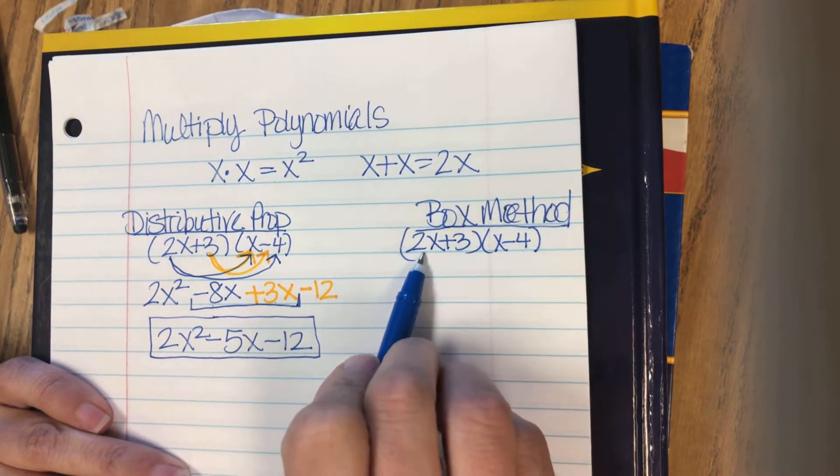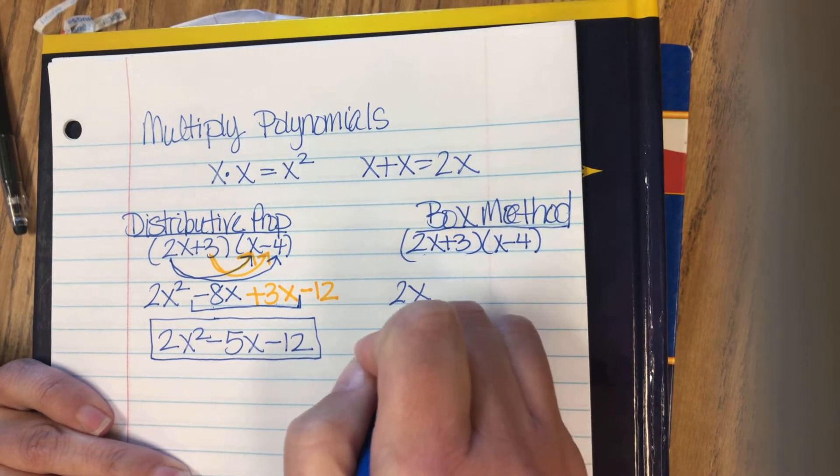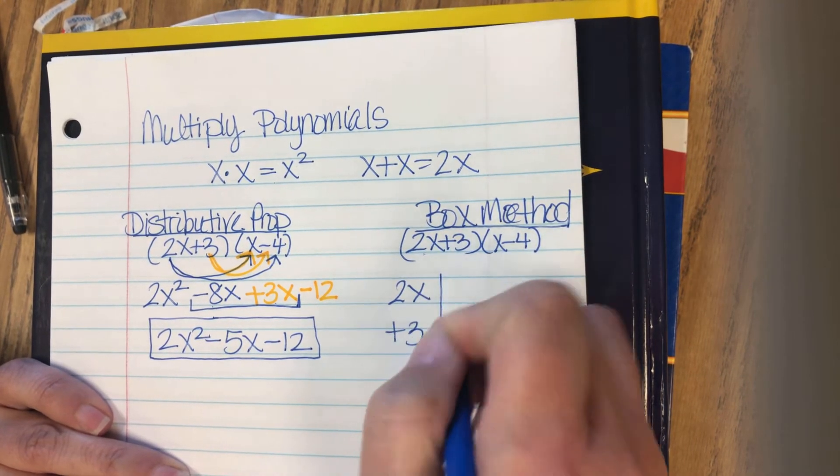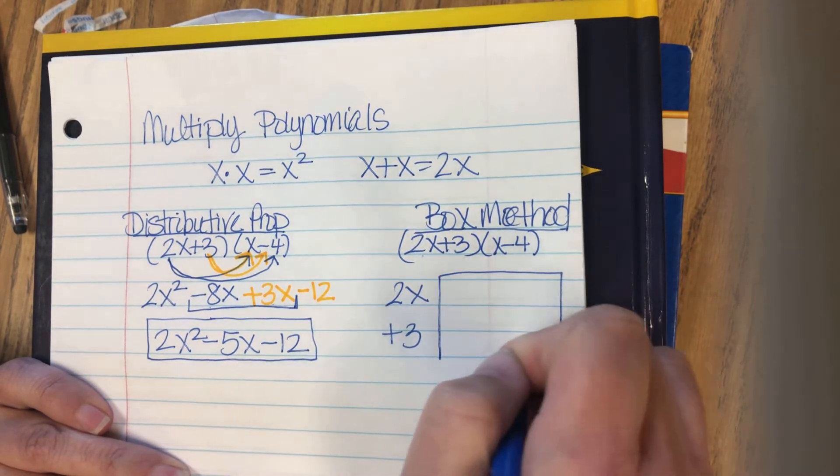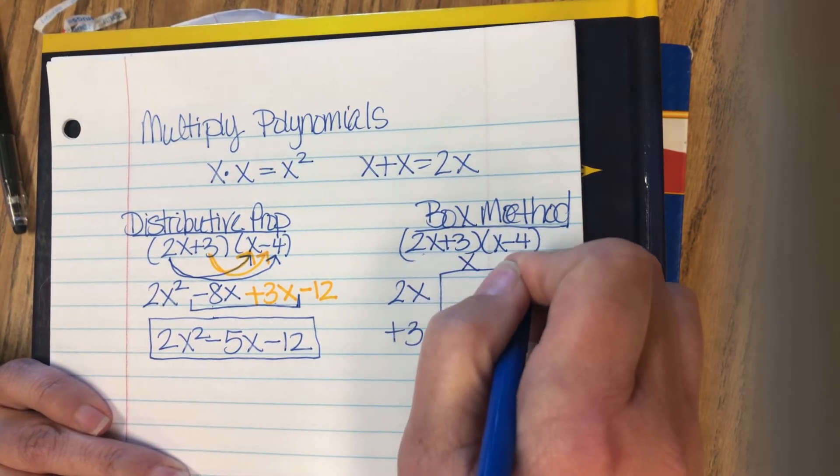For the box, it's 2x plus 3, so I'm going to write 2x and plus 3 on the side. And I'm going to write x minus 4 at the top.